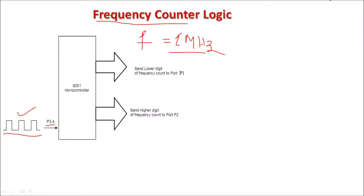This is the unknown signal, and you have studied timers and counters of the 8051. The timer uses internal clock frequency, whereas the counter uses external clock frequency. Observe here — this external clock is a square wave. You can count the frequency of a square wave only. If the signal is not a square wave — for example, a sine wave or triangular wave — you must first convert it into a square wave and then use it to find the frequency.